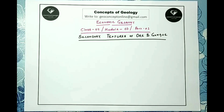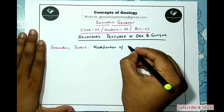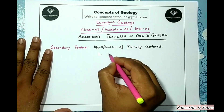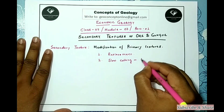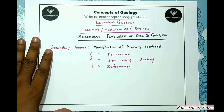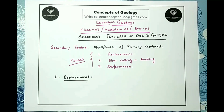Secondary textures result from the modification of primary textures. The modification may be due to replacement, slow cooling, or deformation. So secondary textures result from modification of primary textures, and the probable causes are replacement, slow cooling (also called annealing), and deformation. First, we will concentrate on secondary textures resulting from replacement.